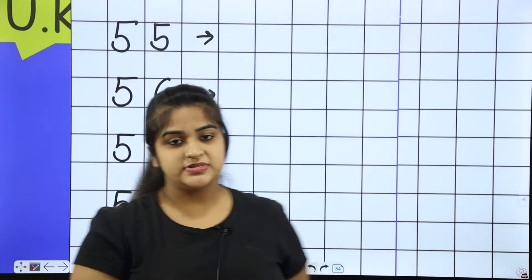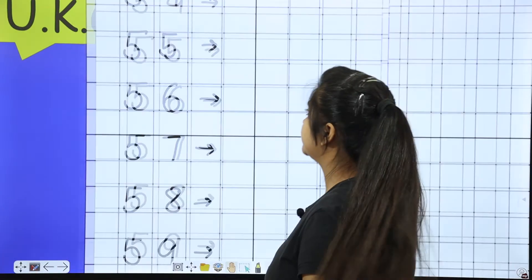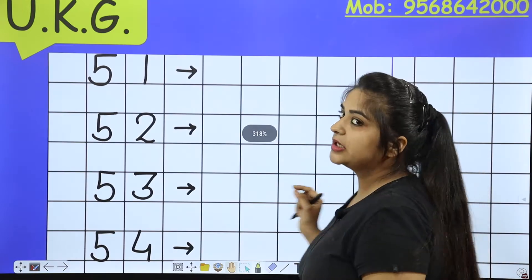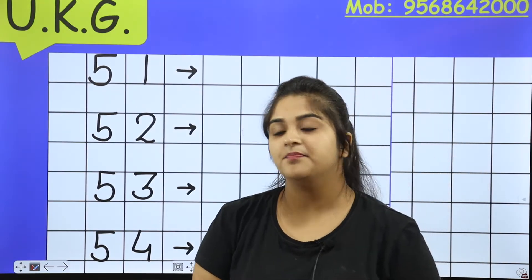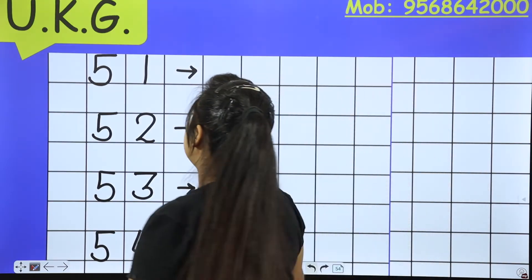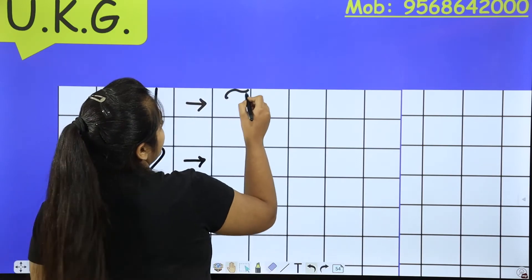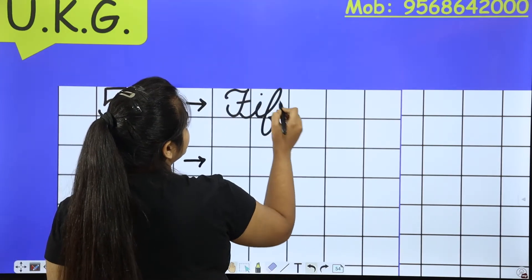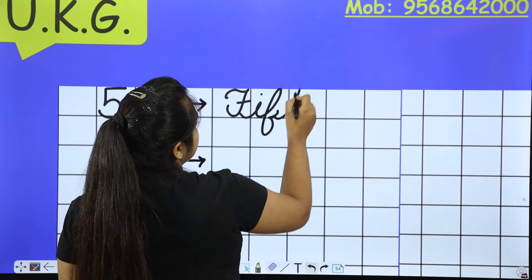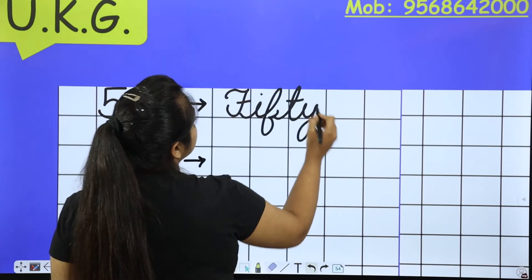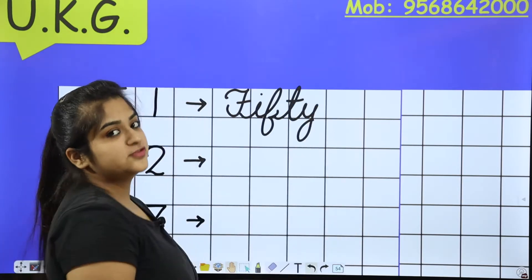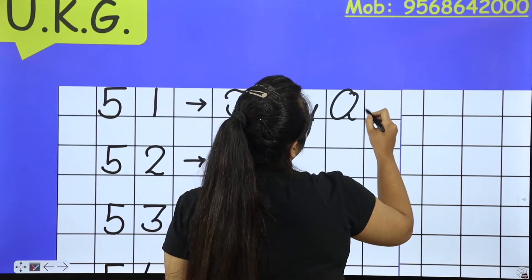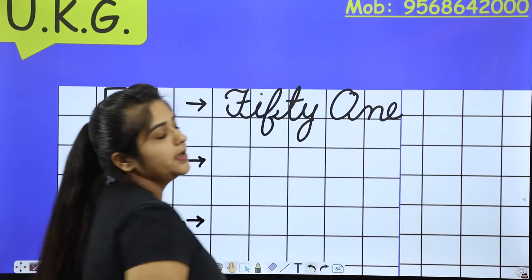So now we will start learning number names from 51. You will write in cursive writing. What is the spelling of 50? F-I-F-T-Y. What is the spelling of 1? O-N-E. So 51 is FIFTY ONE.